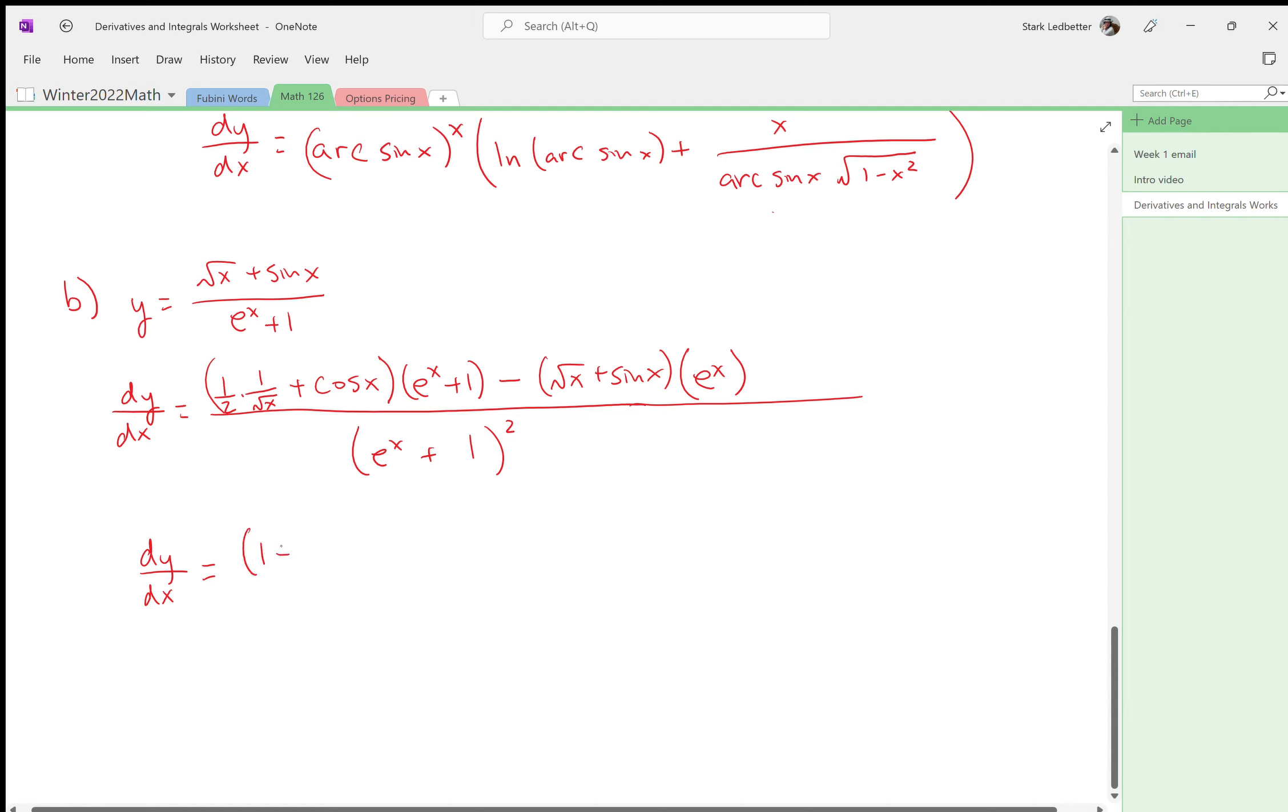So if I just multiply this first parenthesis by two root x, I don't know, maybe you disagree with me on whether it looks better. Minus if I multiply the second parenthesis by two root x, I actually get a two x here, which is super nice, all over two root x times e to the x plus one squared.